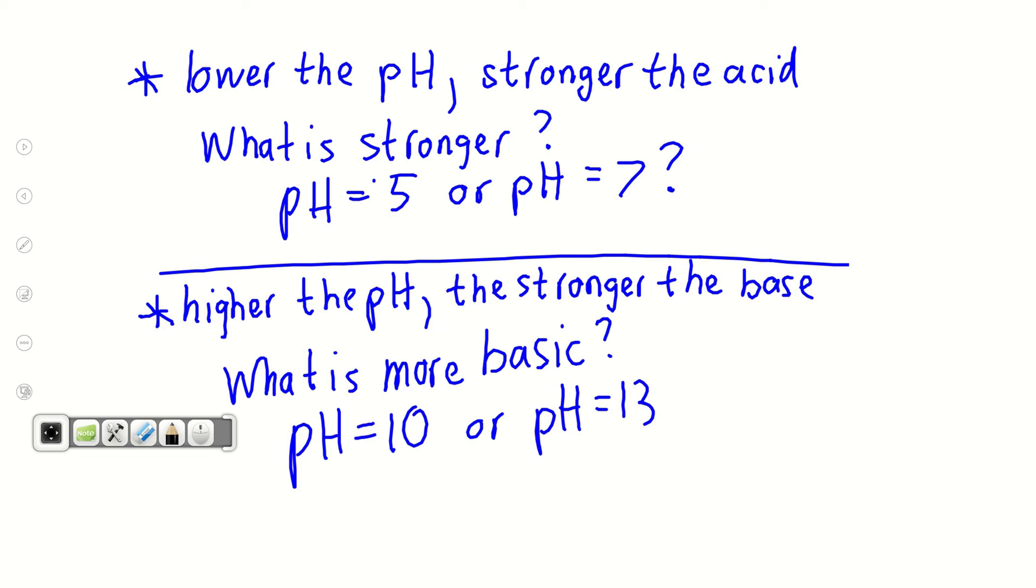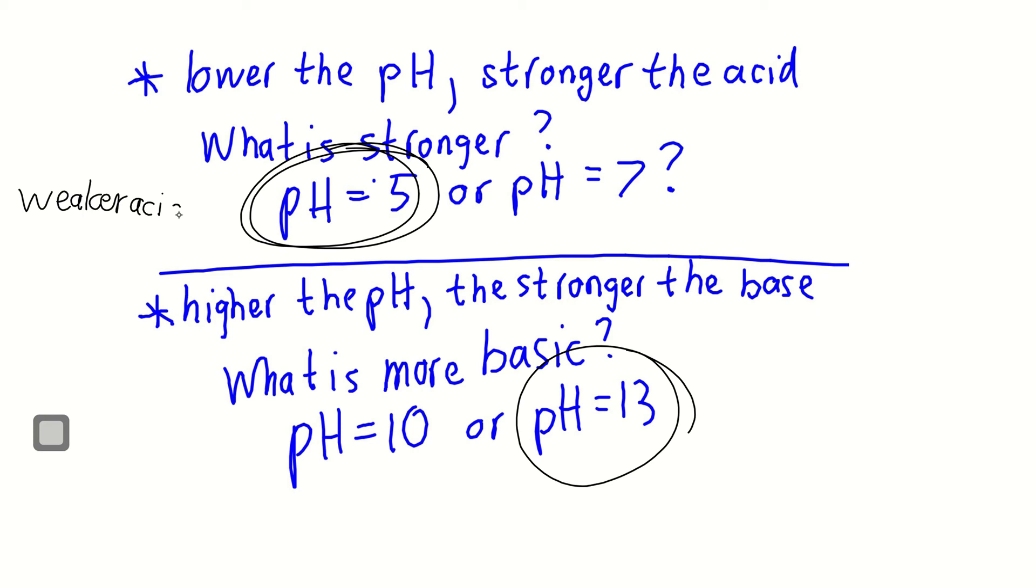As I already stated, the lower the pH, the stronger the acid. So what's stronger, 5 or 7? The answer would be 5. 5 is stronger than 7. 7 is neutral. It's not even an acid anymore. The higher the pH, the stronger the base. What's more basic? 13. You can think of it as the weaker the acid equals a stronger base. That's really what it is. A weaker acid is a stronger base.